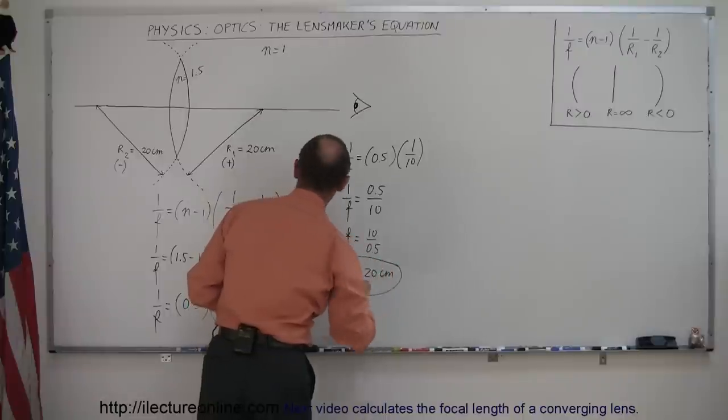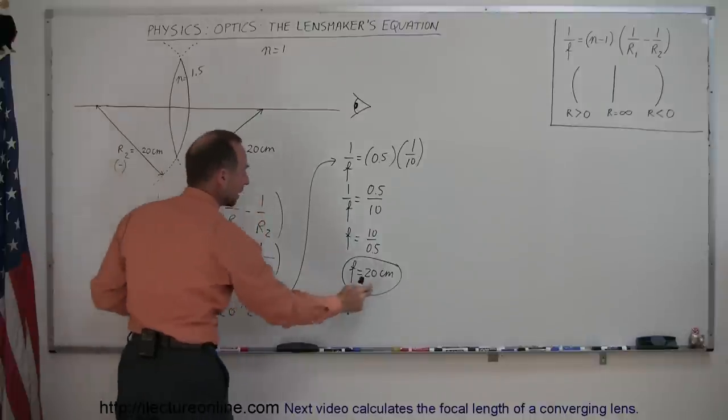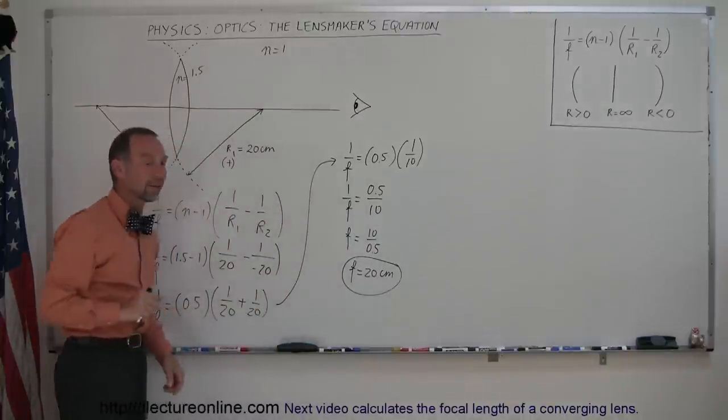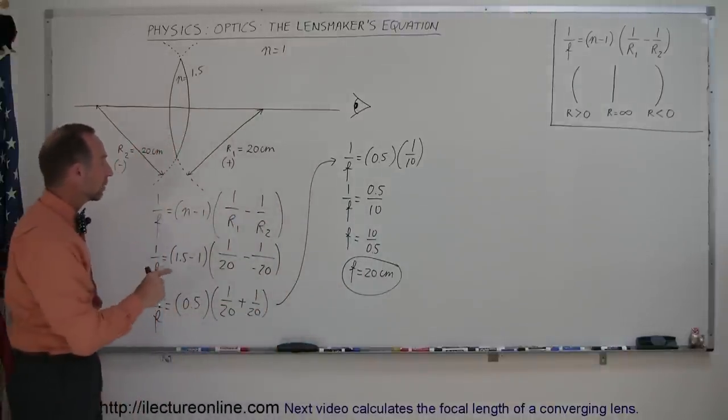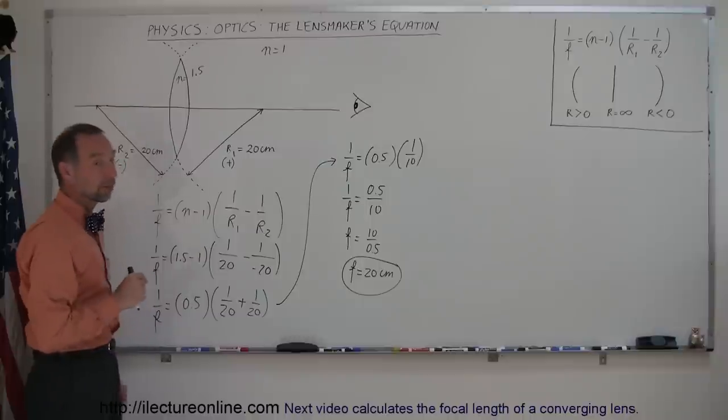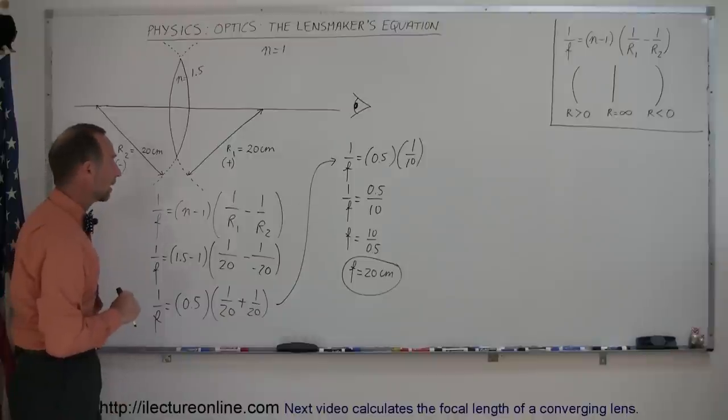Since we used units of centimeters in our radius of curvature, the final result will also be in centimeters. So the focal length of this particular lens is 20 centimeters, which is interesting when you think that that's also equal to the radius of curvature of both sides of the lens.